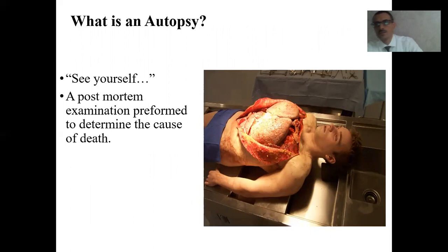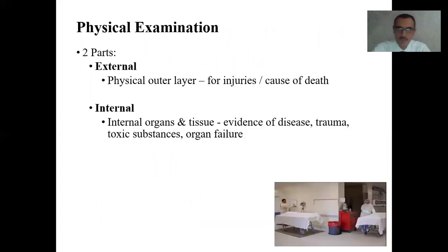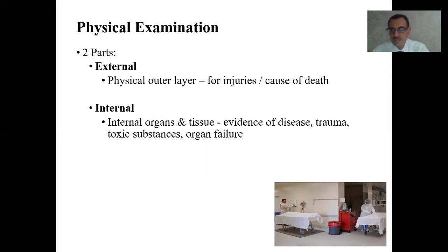Now let us discuss autopsy. What is an autopsy? The translational meaning is 'to see yourself.' This is a post-mortem examination performed to determine the cause of death. Autopsy starts with the physical examination, which includes two parts: external and internal examinations. External examination includes the physical outer layers for injuries and cause of death. Internal examination includes the examination of internal organs and tissues for evidence of disease, trauma, toxic substances, organ failure, etc.